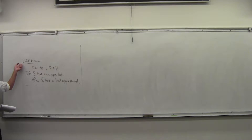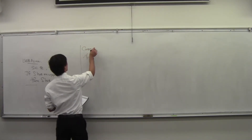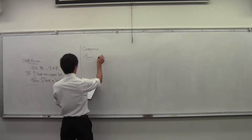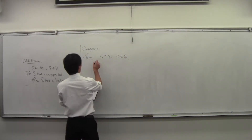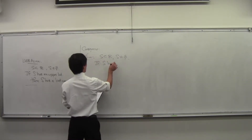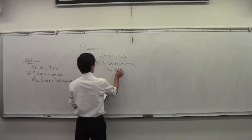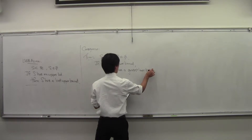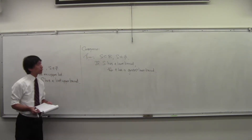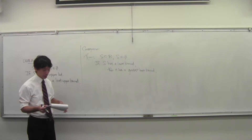The reason is that we can take the least upper bound axiom and turn it into a greatest lower bound statement. We can prove as a consequence the following theorem: if S is a non-empty subset of the reals and S has a lower bound, then it has a greatest lower bound. That's just a consequence of the least upper bound axiom.